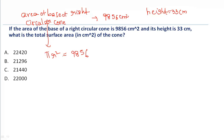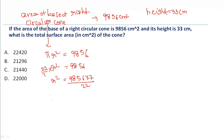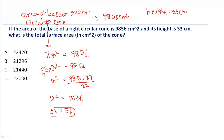To calculate the value of r: π is 22/7, so r² = 9856 × 7 ÷ 22. The value of r² is 3136, and therefore r is equal to 56. We got r = 56 and height h = 33.